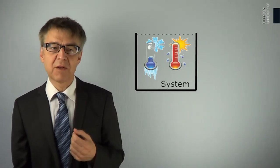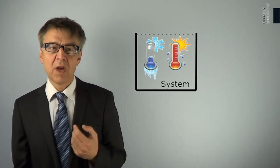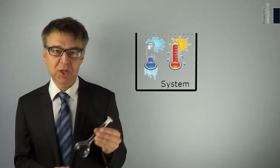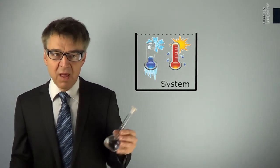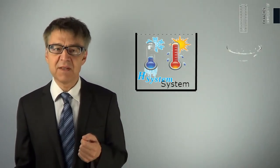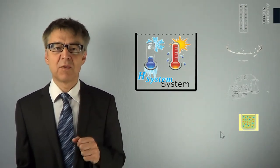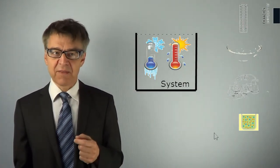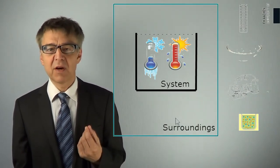We describe systems and processes in terms of enthalpy. Enthalpy is a measure of the amount of energy contained in a system. Each system does not only have a mass, a volume, a temperature, and so on, but also an energy or enthalpy. The latter depends on the system's temperature, on the system's phase, on its chemical composition, and possibly also on its dilution. The surroundings also have an energy content, of course.